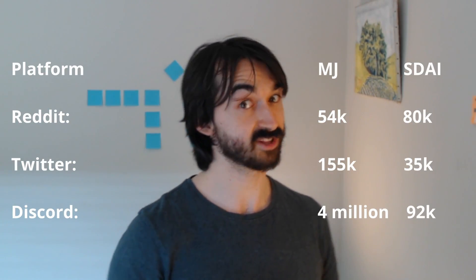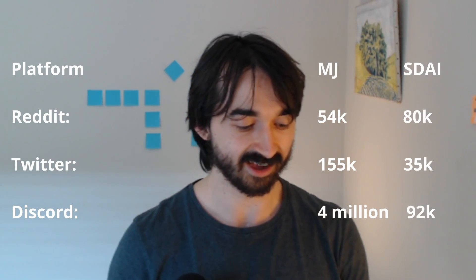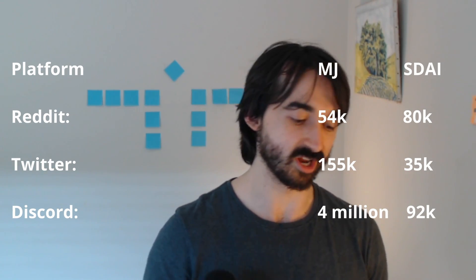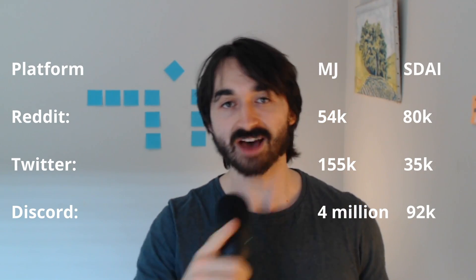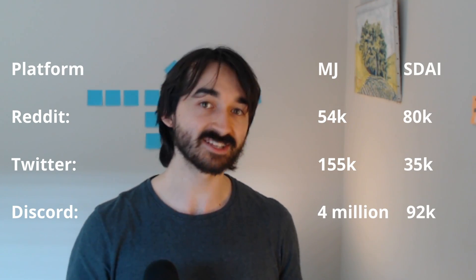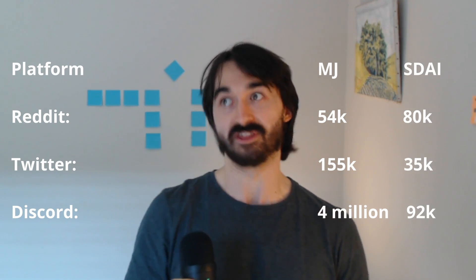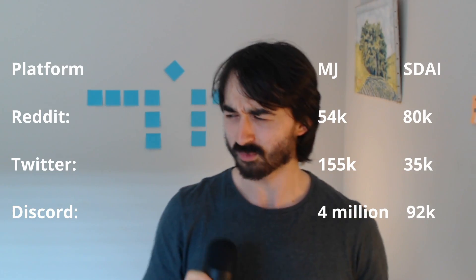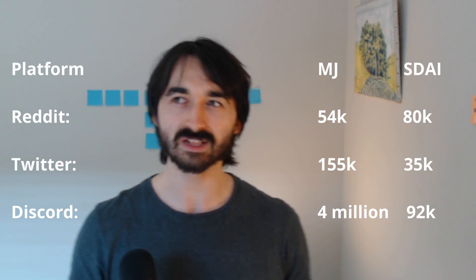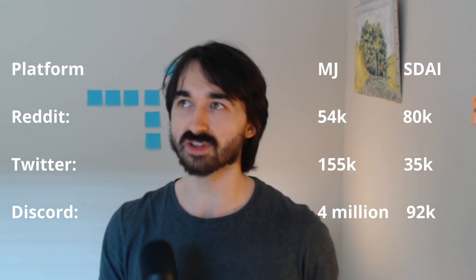If image generation networks really benefit from user feedback, MidJourney might have a big advantage over competitors like Stable Diffusion or DALL-E. The MidJourney community is more centralized and larger. Looking at the numbers comparing the two communities, there's one outlier — the MidJourney Discord — which is a behemoth at around four million members.